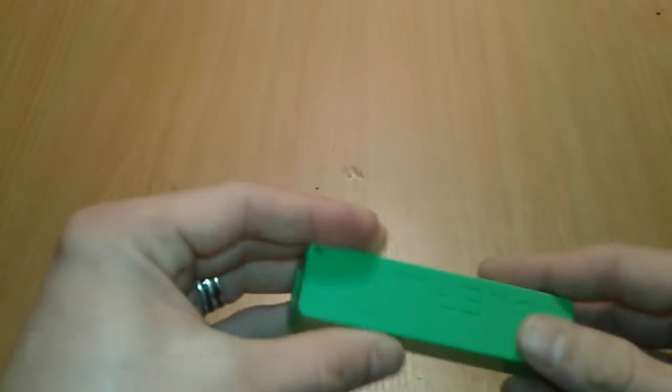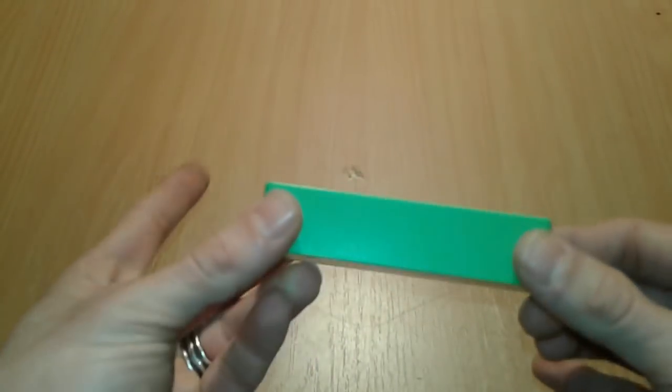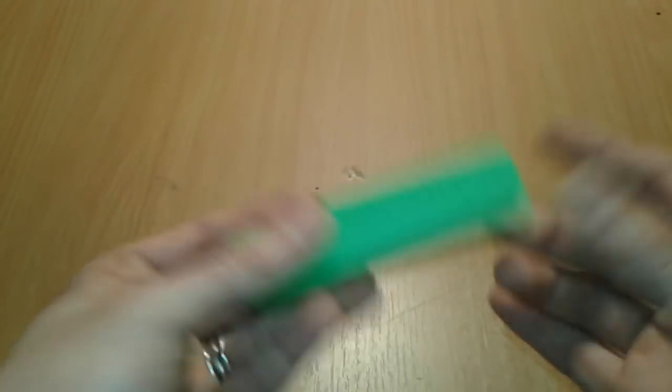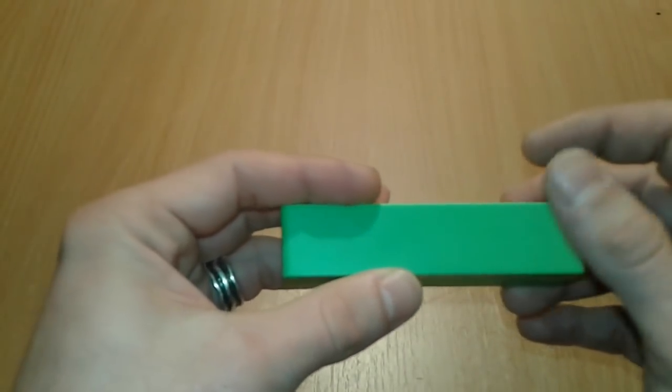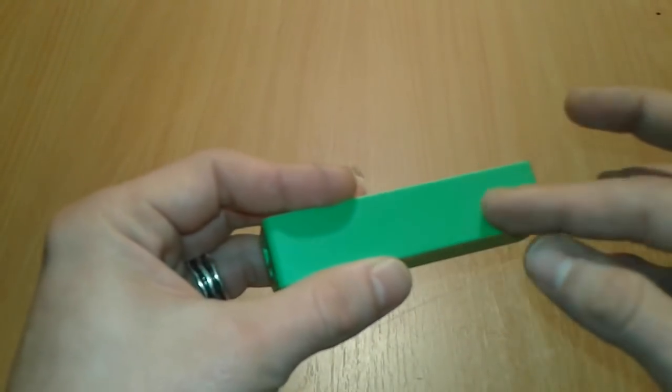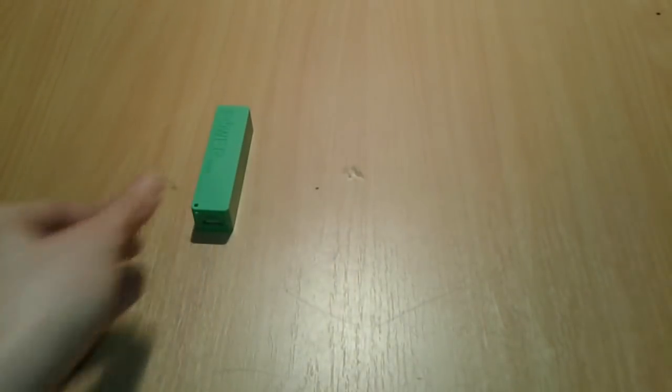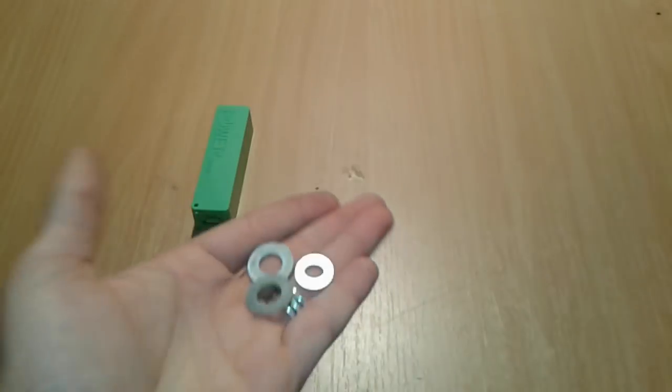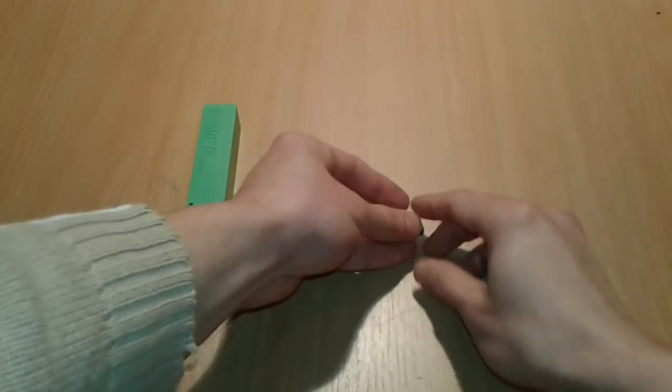First things first, we're going to need a case for our touch switch circuit. I use this power bank, so you can use whatever you have, but keep in mind that you need some space inside to fit the MOSFET. You're going to need some washers and a screw, actually two washers and two screws of various sizes.